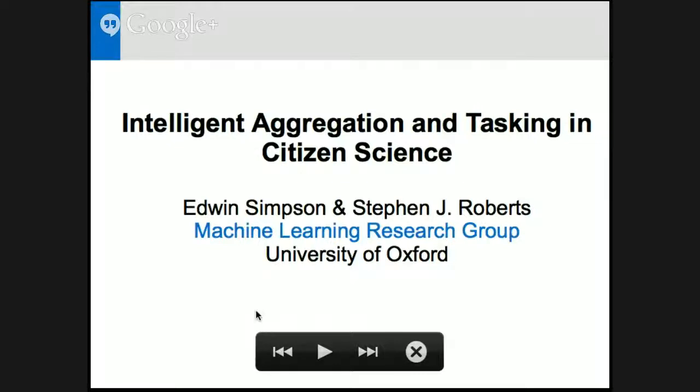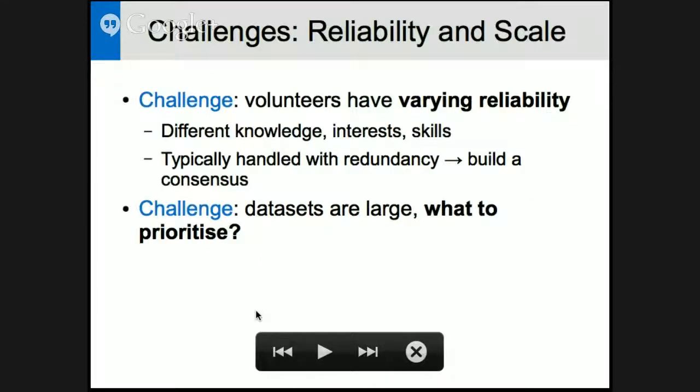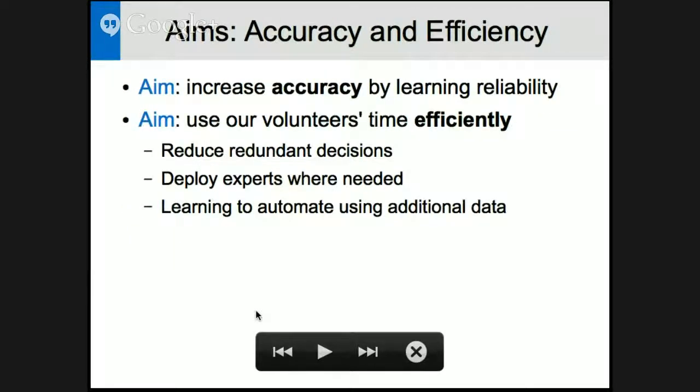So I'm going to talk about the machine learning work that I've been doing alongside my supervisor, Steve Roberts, and so this is all about intelligently aggregating the responses from our volunteers, and also looking at how we can use information that we've learned about the volunteers to decide who should do which tasks to improve the efficiency of our citizen science projects. So first of all, there's a couple of big problems that we all know about. Our volunteers vary in their skill levels and their interests, and thus overall reliability.